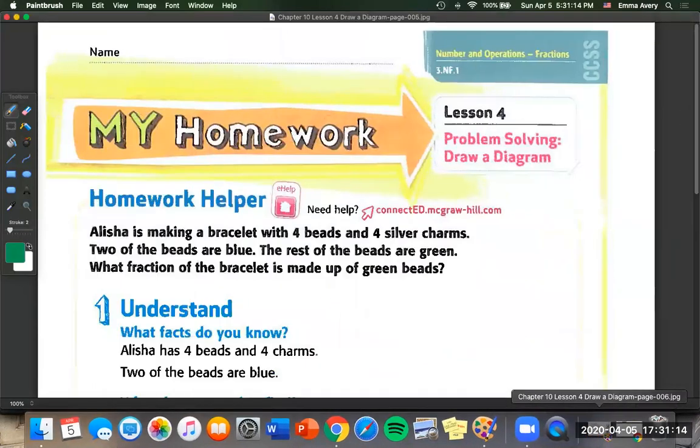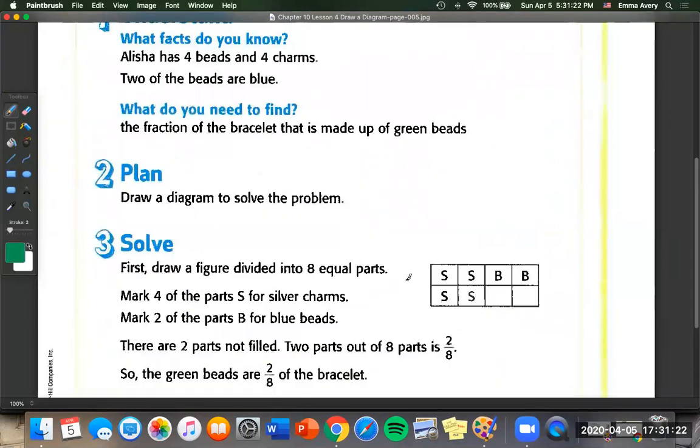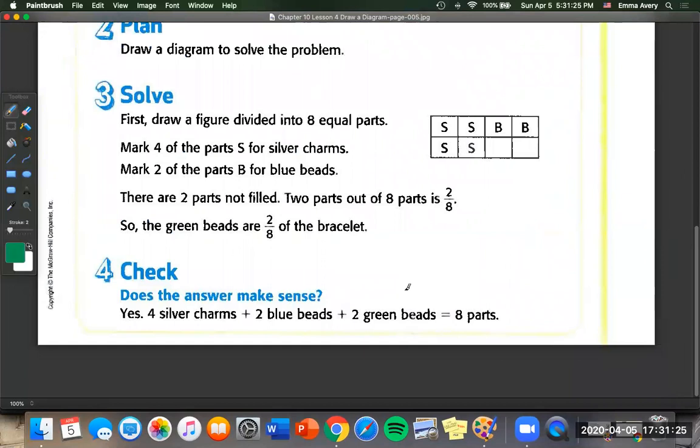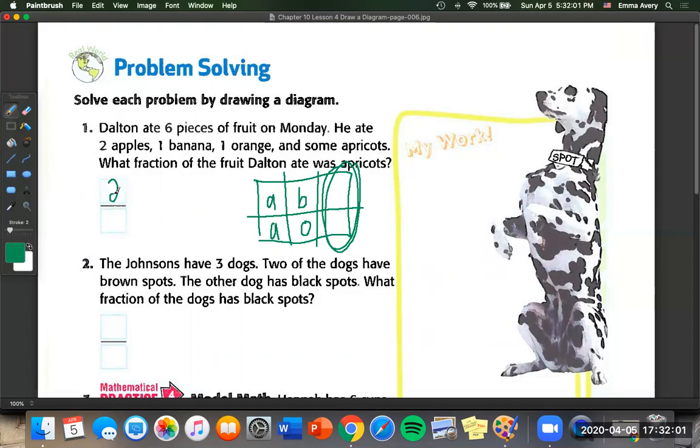Now on to the homework. So you'll have to do this on your own. But let's go through some of the examples. So look, this whole first page is just all an example. So we can go on to the last page. So Dalton ate six pieces of fruit on Monday. He ate two apples, one banana, one orange, and some apricots. What fraction of the fruit Dalton ate was apricots? So we have six pieces. So we need a box with six slices in it. Two were apples. One was a banana. One was an orange. And that leaves these two as apricots. So two over our total number of fruit, which is six.